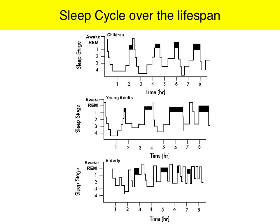You don't need to know these graphs in excessive detail. A couple of key points: during childhood, we have significant stage 3 and 4 of non-REM, due to that highly active lifestyle that we lead during that phase of life.